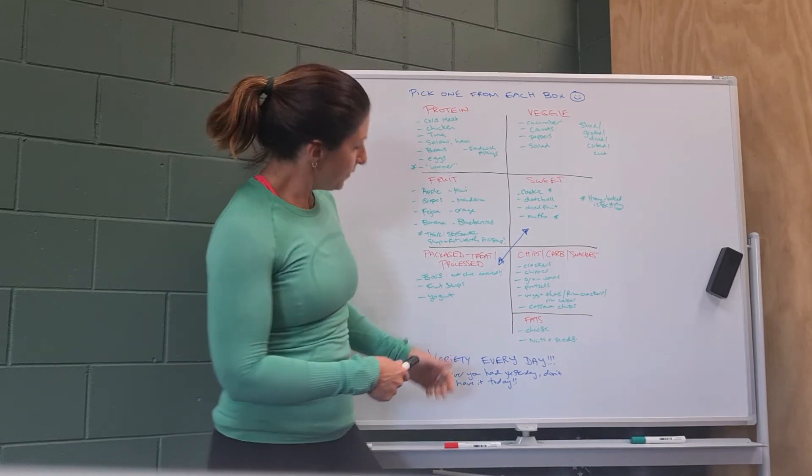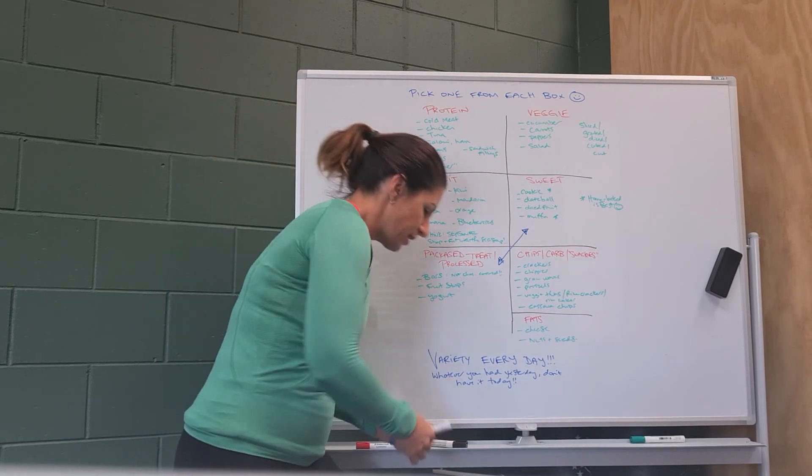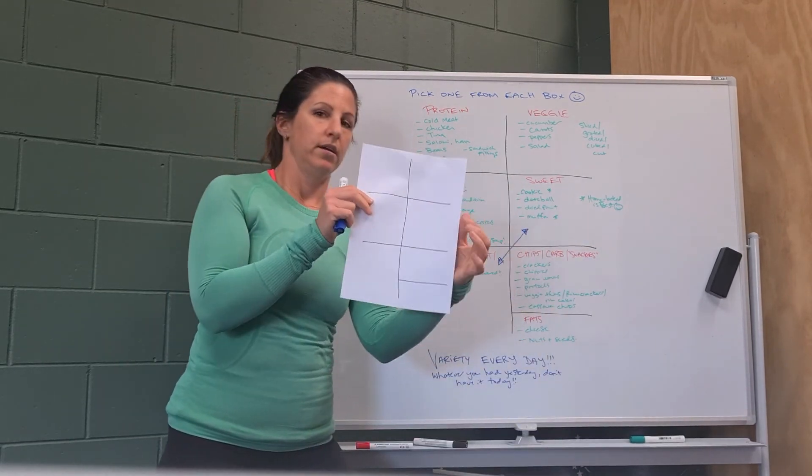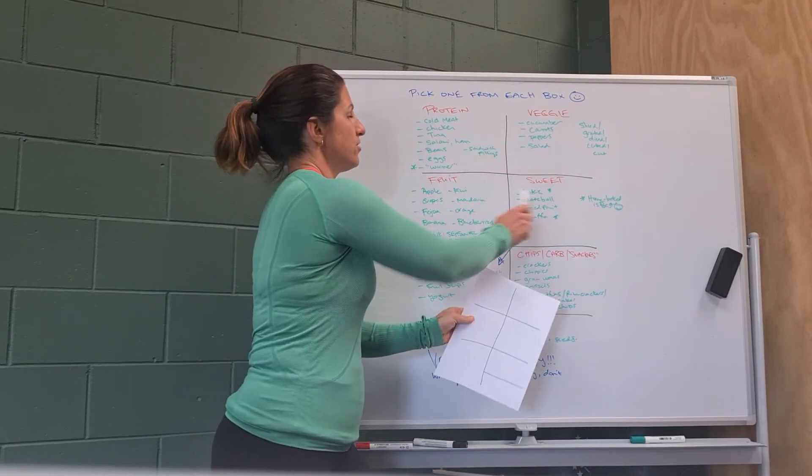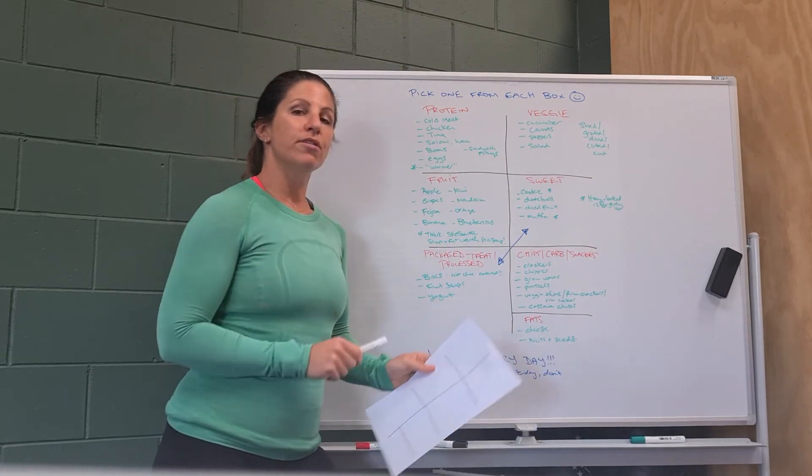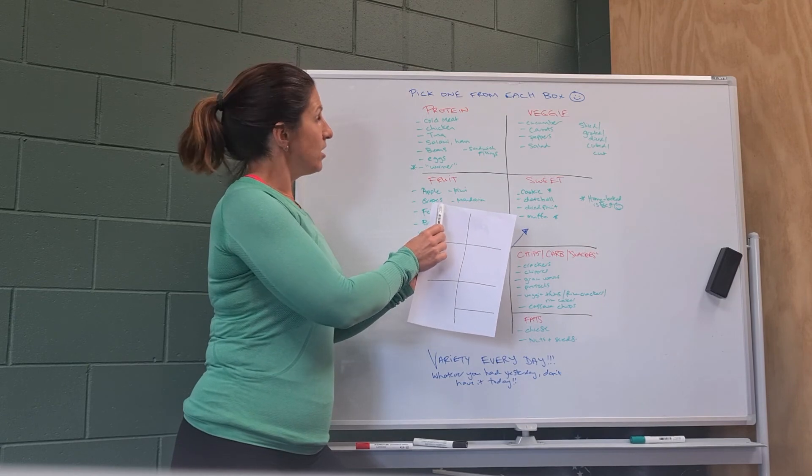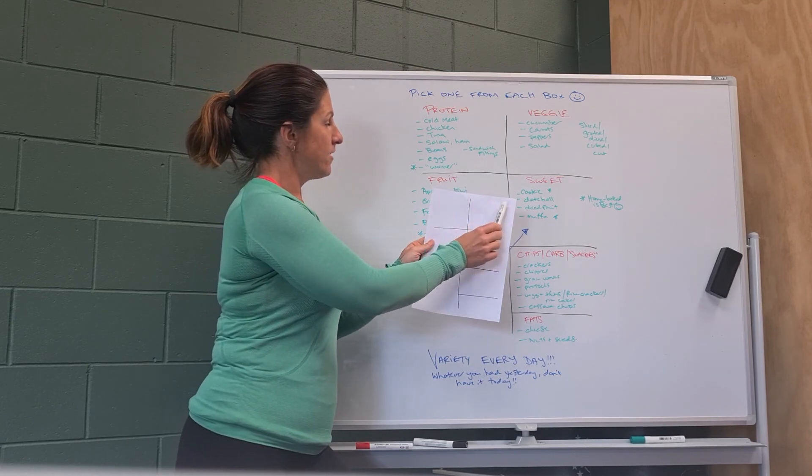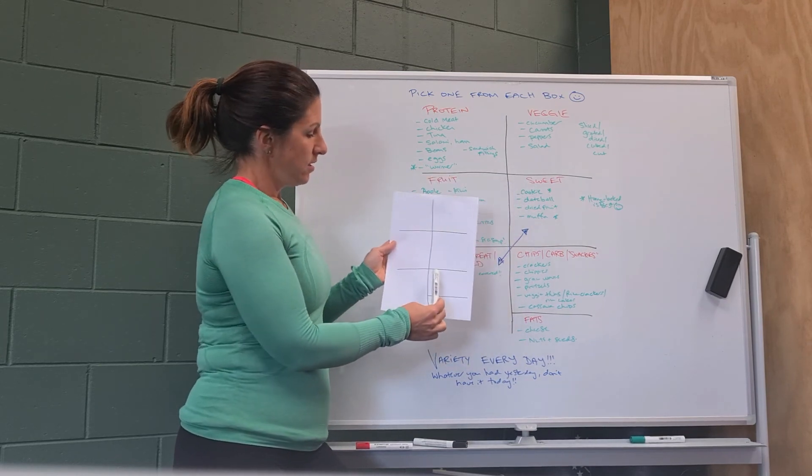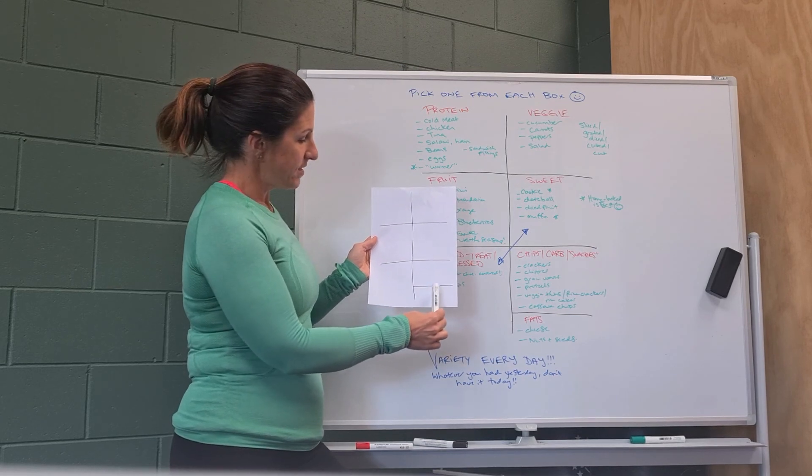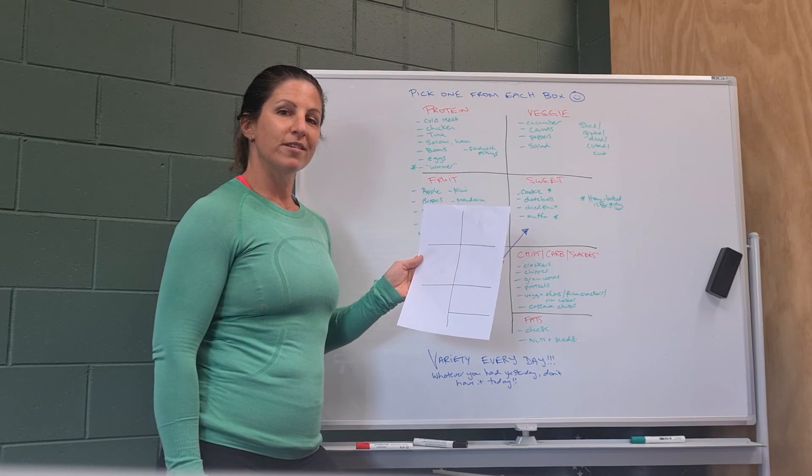So for example, I want you guys now to think of taking your menu here. I want you to take some ideas from each of these categories of things that you think that you could eat. So you might want to put in here, put in your headings. So we've got protein, vegetable, fruit, sweet, packaged, chips, carbs, and fats. And note down some foods that you like that could go under each one of those categories.